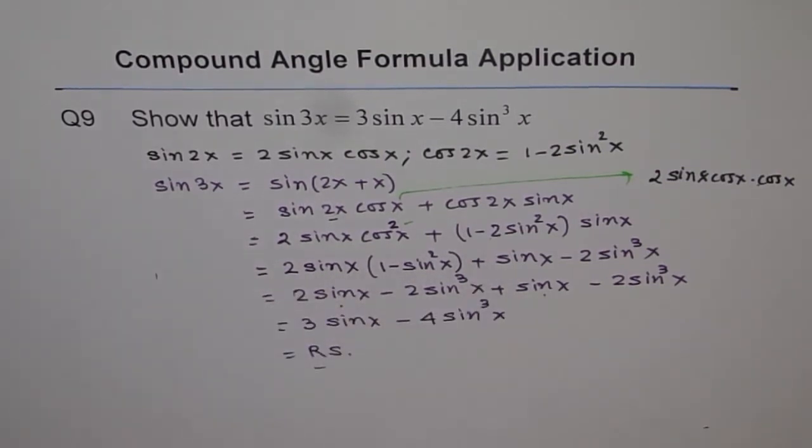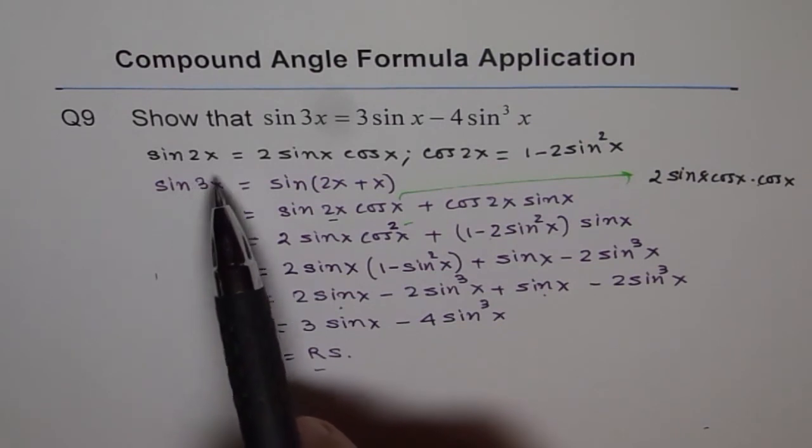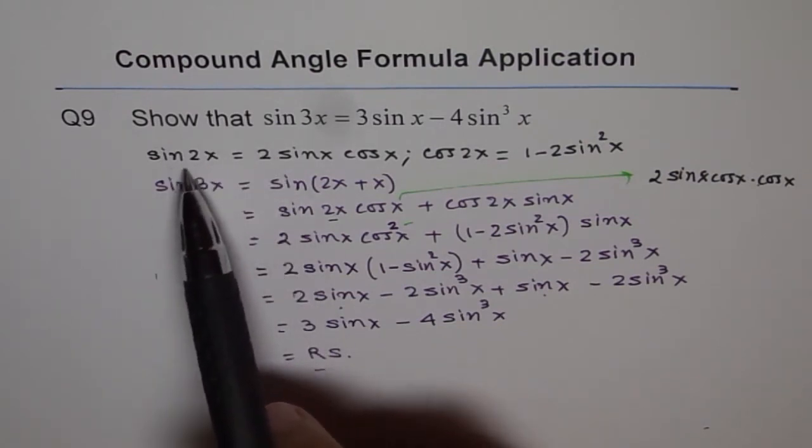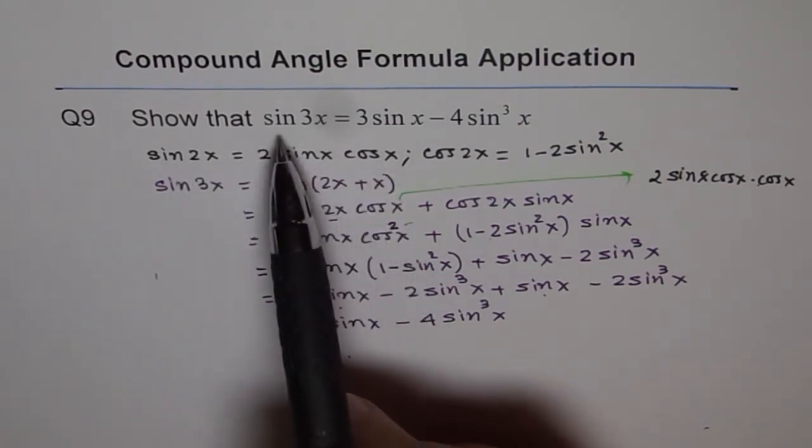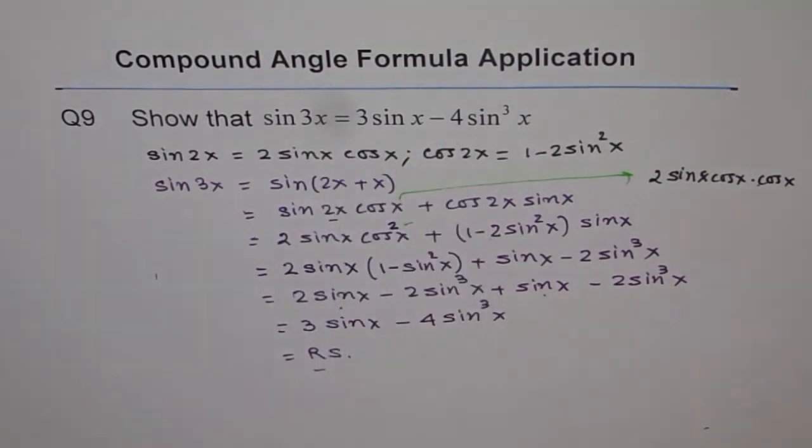So that is how you prove this identity. This is not only an identity. It's a formula for you. So from now on, we know what sine 2x is. Sine 2x is 2 sine x cos x. And sine 3x can be written as 3 sine x minus 4 sine cube x. All right. We go.